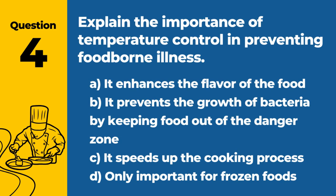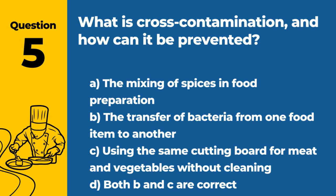Question 4. Explain the importance of temperature control in preventing foodborne illness. The answer is B: It prevents the growth of bacteria by keeping food out of the danger zone. Proper temperature control is essential for food safety.